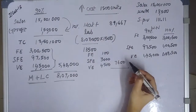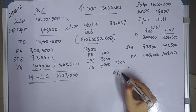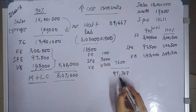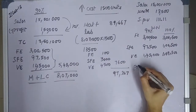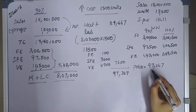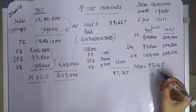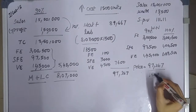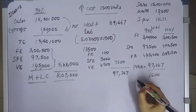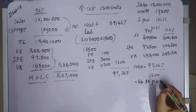The total differential cost comes to 97,267. Dividing this by 1,500 units gives the per unit cost price. So the differential cost per unit equals 97,267 divided by 1,500, which equals 64.85 per unit.